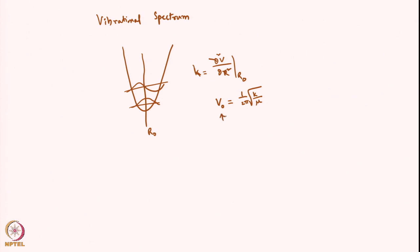If I can measure v_naught, I will be able to get the force constant. The force constant is nothing but the stiffness of the bond — like the stiffness of a spring, whether the spring is strong or weak. So the force constant tells you whether the bond is a strong bond or a weak bond.